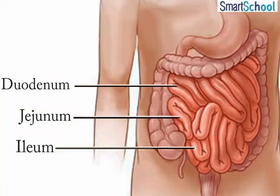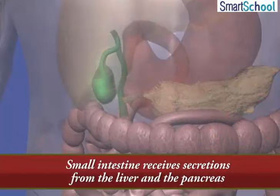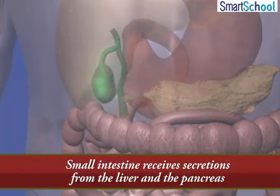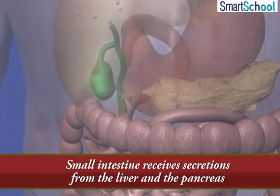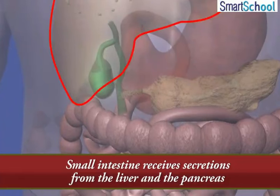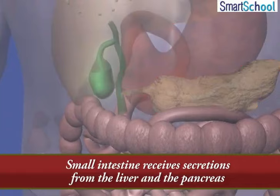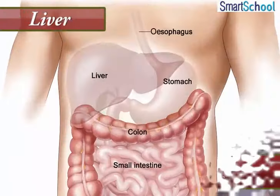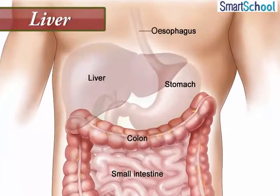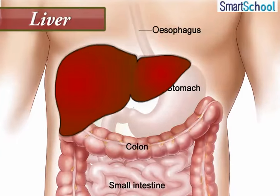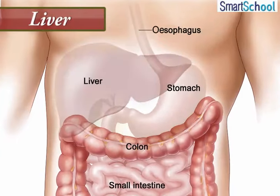The small intestine receives secretions from the liver and the pancreas, besides secreting digestive juices itself. The liver is the largest gland in the body. It is reddish-brown and is situated in the upper part of the abdomen on the right side.